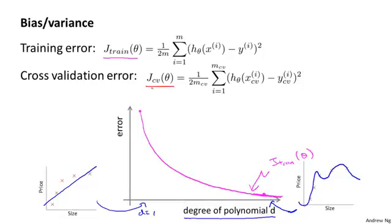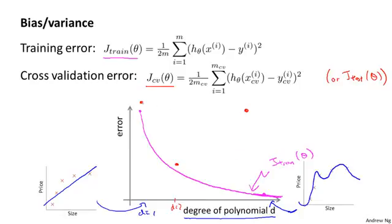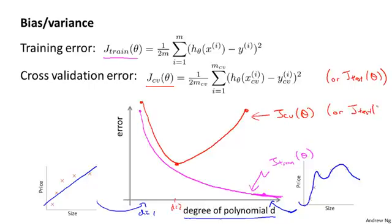Next let's look at the cross-validation error — and the test set error gives a pretty similar result. If d equals one, we're fitting a very simple function and may be underfitting, giving a very high cross-validation error. If we fit an intermediate degree polynomial, say d equals two, we get a much lower cross-validation error. Conversely, if d is too high, say four, we're again overfitting and end up with a high cross-validation error. So if you plot a smooth curve, you get a U-shaped curve for J_cv(θ), and J_test(θ) looks very similar.